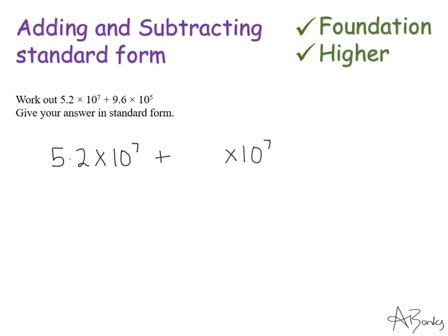So this 9.6 needs dividing by 10 twice. So if I divide it by 10 once, that's 0.96. And if I divide it by 10 again, it's 0.096. So that's why this question is a slightly more complicated one.